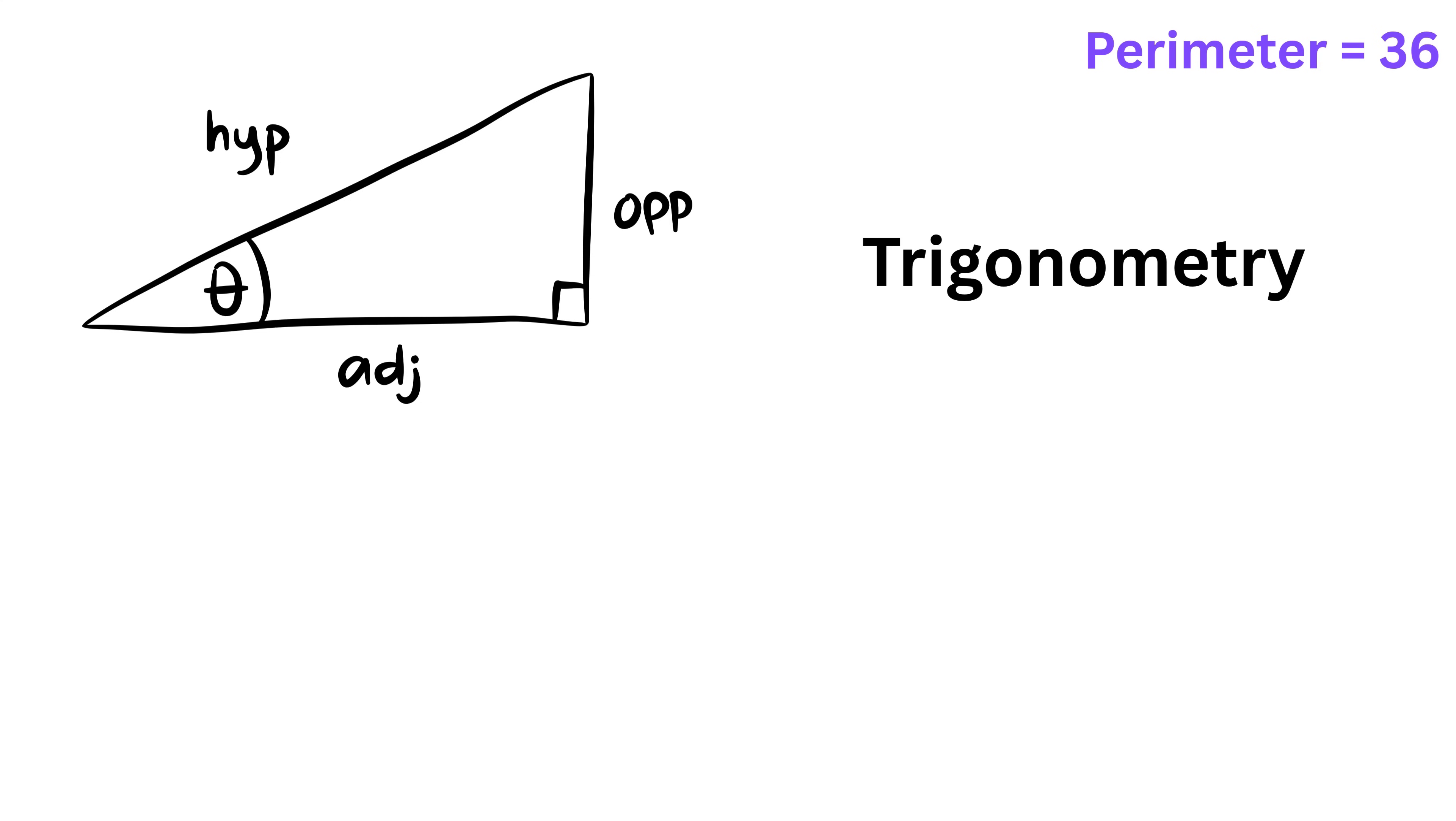Trigonometry starts with three simple ratios that relate an angle inside a right triangle to its side lengths. These ratios are called sine, cosine, and tangent. Assume this acute angle is theta. Then the sine of this angle theta is simply the length of the side opposite the angle divided by the length of the hypotenuse. Then the cosine of this angle theta is the length of the side adjacent to the angle divided by the length of the hypotenuse.